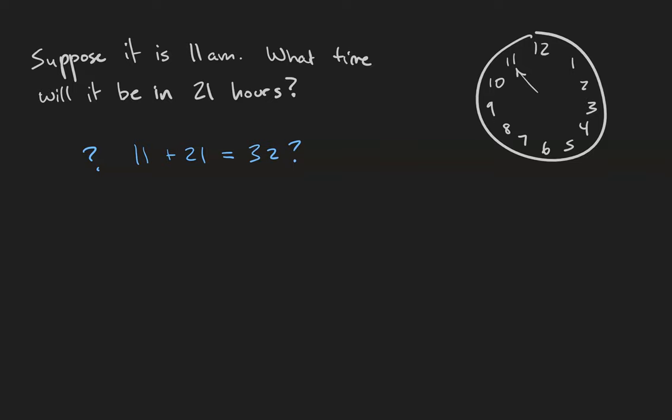At that point, notice that 32 minus 8 is 24, and 24, of course, is a multiple of 12. So 32 is congruent to 8 modulo 24, or modulo 12, depending on how you count your time. So this relation is how you've been talking about time your entire life.